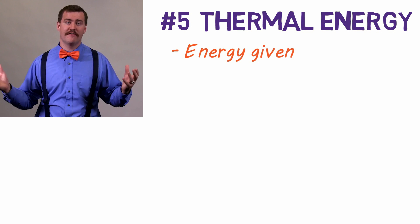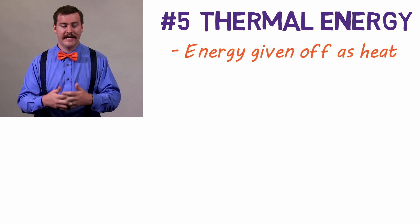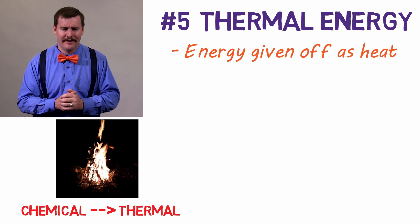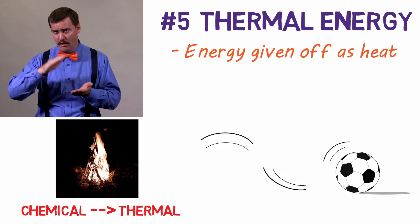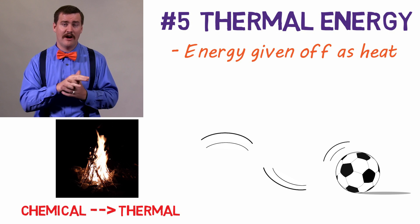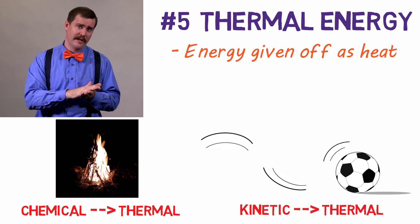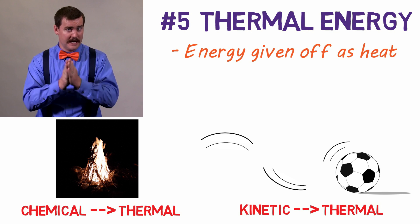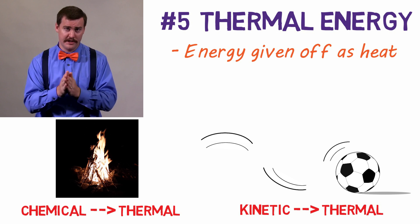And finally, number five: thermal energy. This is the energy given off as heat. When you start a campfire, you're breaking chemical bonds in the wood and transferring the chemical energy of those bonds into thermal energy and fire. Friction is another example. When a ball is rolling across the ground, there's friction between the ball and the ground — that friction slows the ball down, but it's actually that kinetic energy being transferred into thermal energy, which is then dissipated into the ground. It's also why you can warm up your hands by rubbing them together, because you're taking kinetic energy in the movement of your hands and converting it to thermal energy through friction.